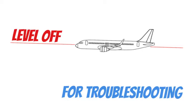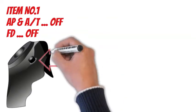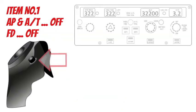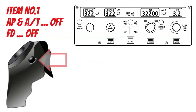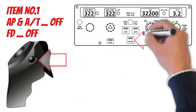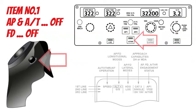Item number 1: If the safe conduct of the flight is impacted — Autopilot: off. Autothrust: off. Flight directors: off.